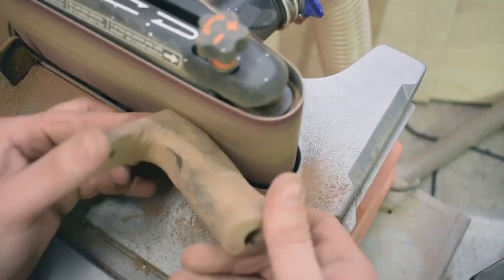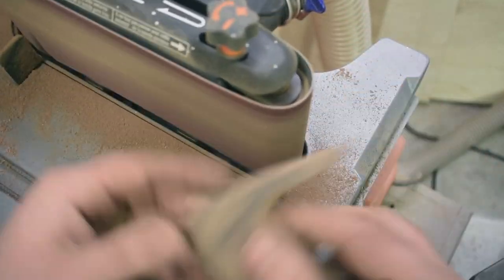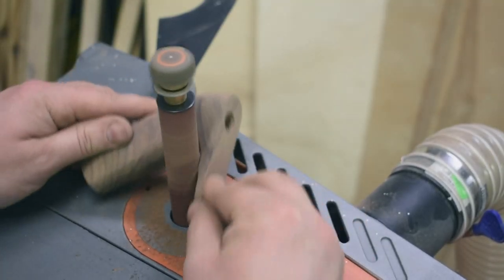And then I used the smaller diameter of the belt to get into some of the nooks and crannies on the handle and once I'd done all I could there I switched to one of the smaller spindles to really finesse everything.